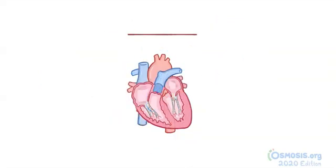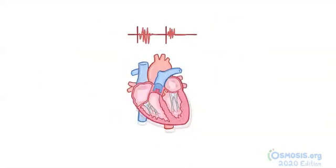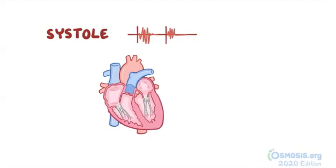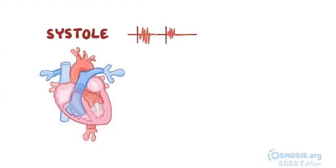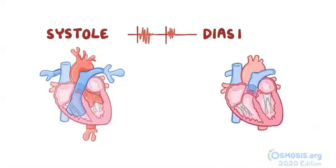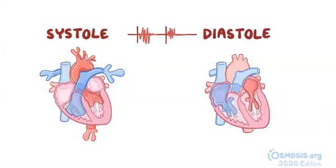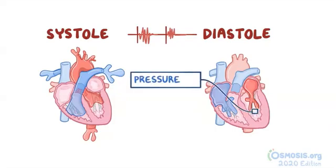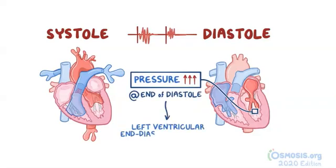Each heartbeat consists of two phases: systole, when the heart contracts and pumps blood out of the ventricles, and diastole, when the heart relaxes and the ventricles fill with blood. As the left ventricle fills during diastole, the pressure within it rises. The pressure at the end of diastole is called the left ventricular end-diastolic pressure, which is a key determinant of cardiac preload.